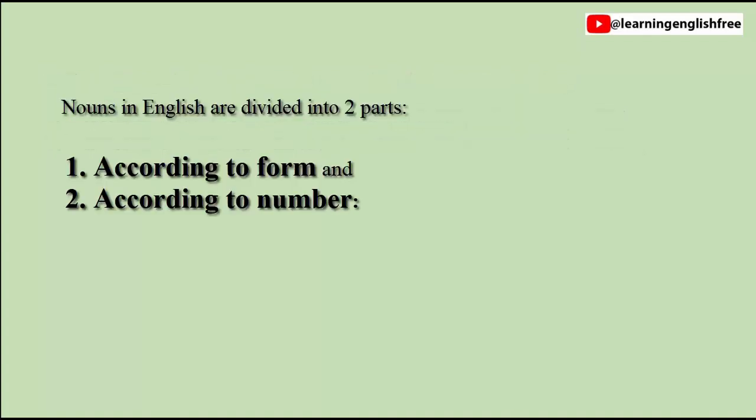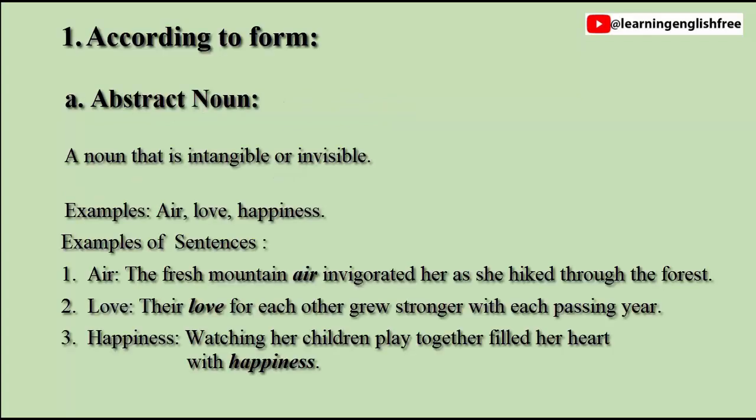Nouns in English are divided into two parts: 1. According to form, and 2. According to number. According to form: A. Abstract noun — a noun that is intangible or invisible. Examples: Air, Love, Happiness.